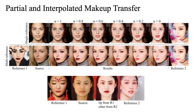Since the makeup matrices gamma and beta are spatially averaged, partial and interpolated makeup transfer can be realized during testing. To achieve partial makeup transfer, we compute the new makeup matrix by re-weighting itself using the face parsing results. PSGAN can then realize partial makeup transfer by assigning different makeup parameters on different pixels. Moreover, we can interpolate the makeup between two reference images by a coefficient, and PSGAN can yield a smooth transition between two makeup styles.